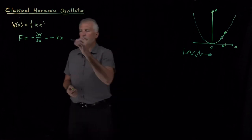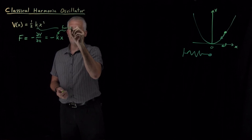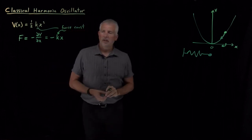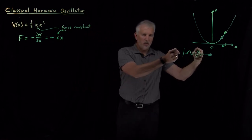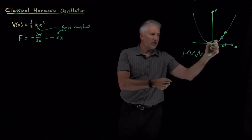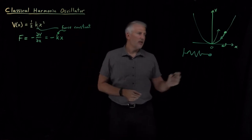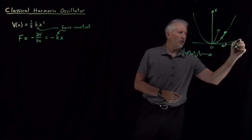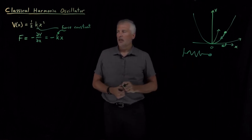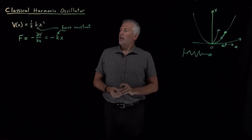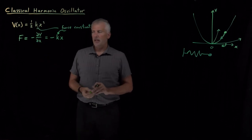This constant k, when we're talking about springs, we call a force constant. A strong, stiff spring — one that's very hard to stretch because the energy rises very quickly as I stretch the bond length — has a large value of k, a large force constant. A very soft spring with a low force constant would be one that's very easy to stretch, like a slinky for example. So that variable is called the force constant.